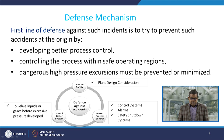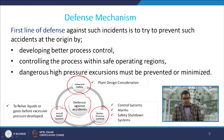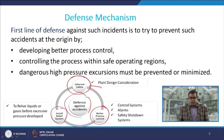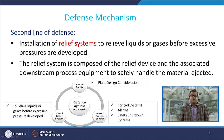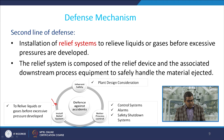You may have a defence against such accidents by installing a relief system, maintaining better process control, and adopting the inherent safety of every process. The second line of defence — installation of a relief system to relieve liquid or gases before excessive pressure develops — is composed of a relief device and associated downstream process equipment to safely handle the ejected material, thereby avoiding vessel rupture or failure.